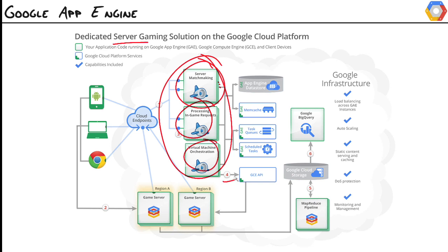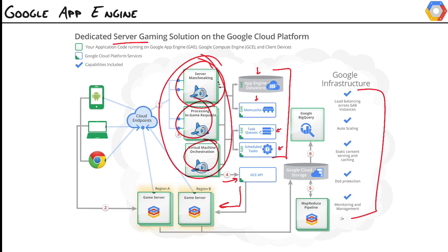App Engine is also used to orchestrate the back end — it'll use the Google Compute Engine API to manage those dedicated virtual machines. You can see that it uses many of the App Engine services we talked about: it persists data in the Datastore, provides quick access via Memcache, and uses task queues for notifications and scheduled tasks for maintenance. The sky's the limit as far as what you can build — we can mix and match products and services to come up with a solution tailored to our needs. The real important thing is that Google handles all the hard stuff.